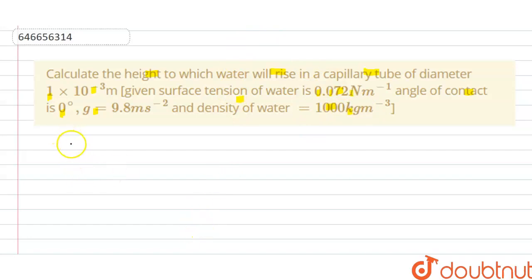So the solution of this question is: we have the radius. Firstly, we have given the diameter D, that is 1 × 10⁻³ meter, or we can write this as radius R = 5 × 10⁻⁴ meter.